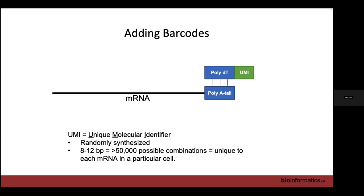In practice, this isn't quite true because randomly synthesized does not mean equally likely randomly synthesized, so we do have biases towards certain sequences for UMIs. We tend to combine both the UMI and the location that the mRNA transcript maps to in the genome to identify a unique mRNA molecule captured in our experiment.